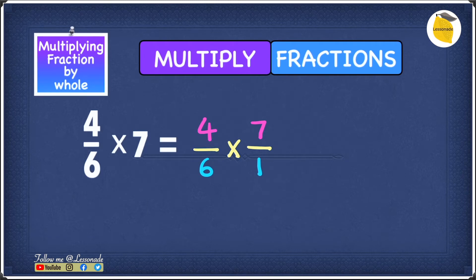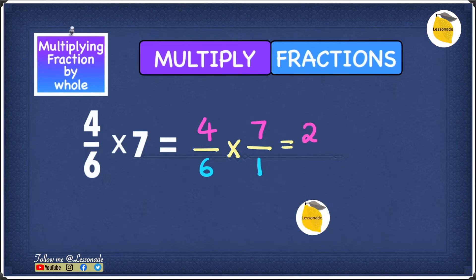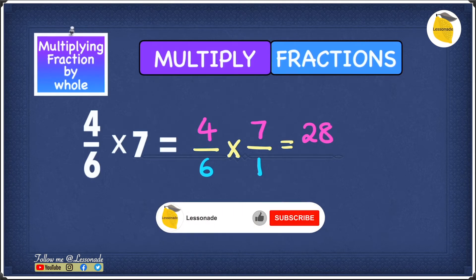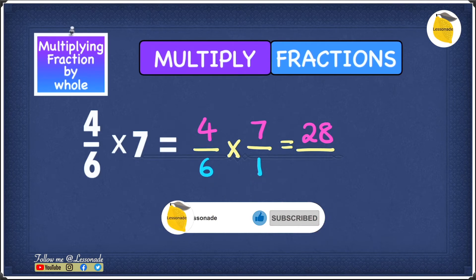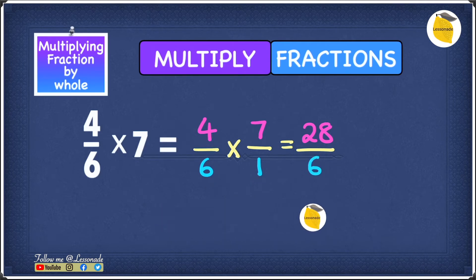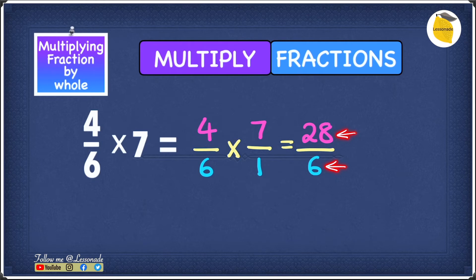Just like in the previous example, we multiply the numerators: 4 times 7 gives you 28. Next we multiply the denominators: 6 times 1 gives you 6. So right now we have 28 over 6.